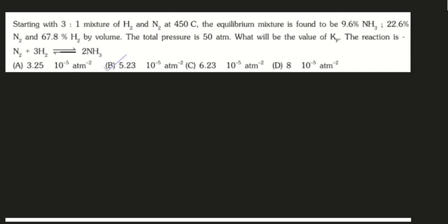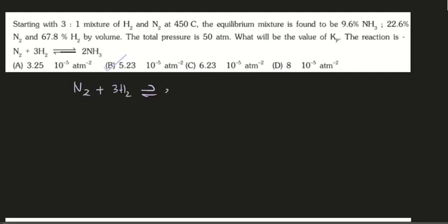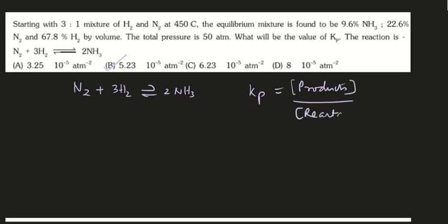Starting with a 3 to 1 mixture of hydrogen and nitrogen, we write the reaction. This is very important: product by reactant. The Kp expression is P(NH₃) squared divided by P(N₂) into P(H₂) cubed. This is the Kp expression. We will substitute the Kp values. The ratio is a direct ratio of 3 is to 1 for hydrogen to nitrogen.